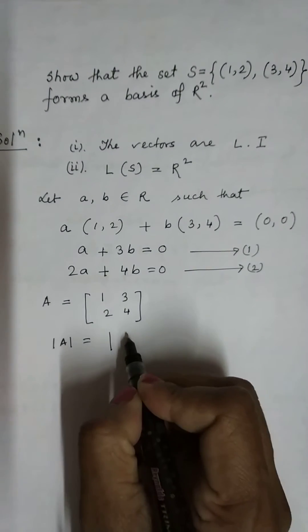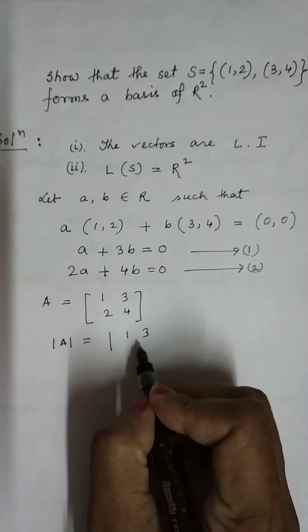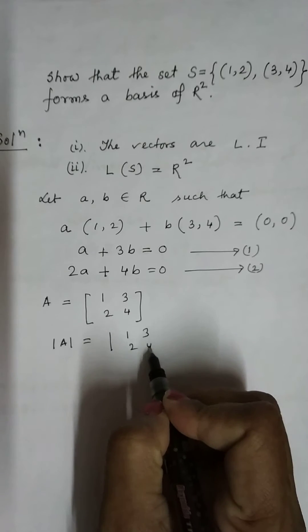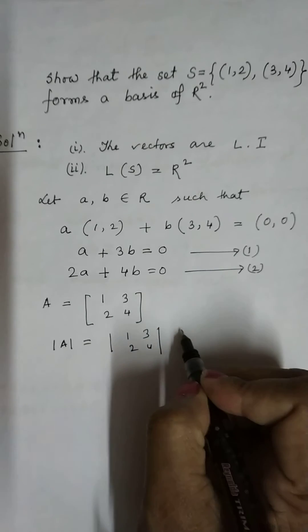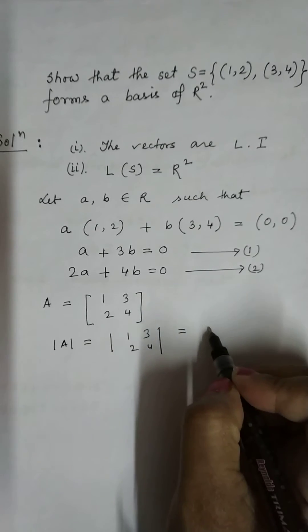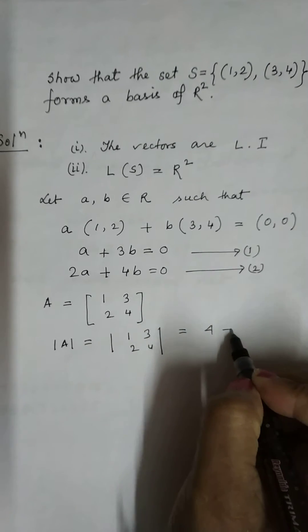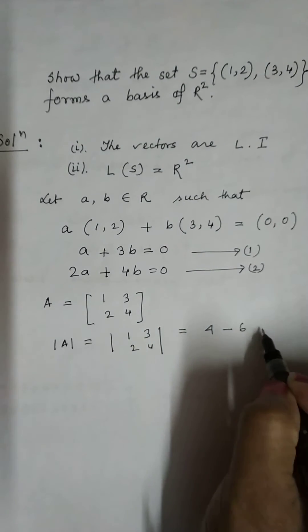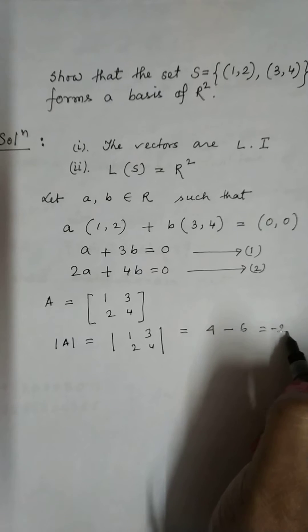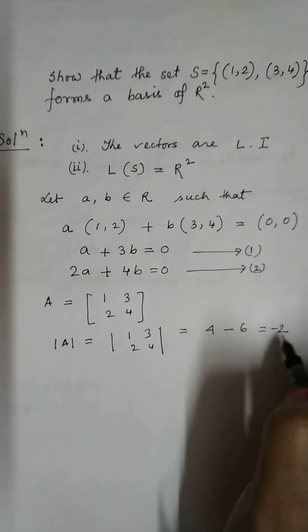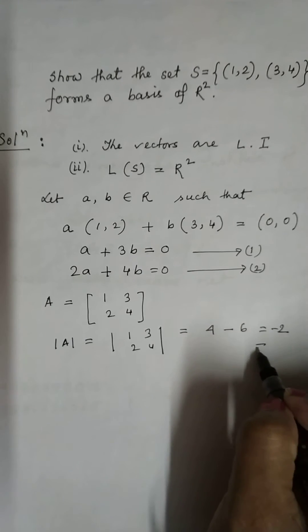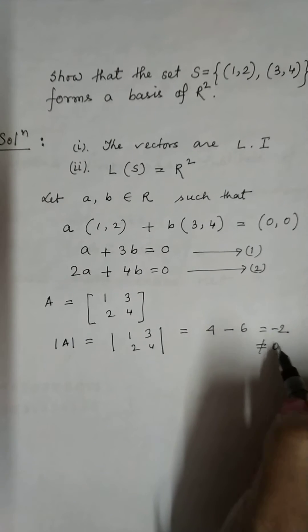The determinant of A is computed as (1)(4) minus (3)(2), which gives 4 minus 6, that is minus 2, which is not equal to 0.